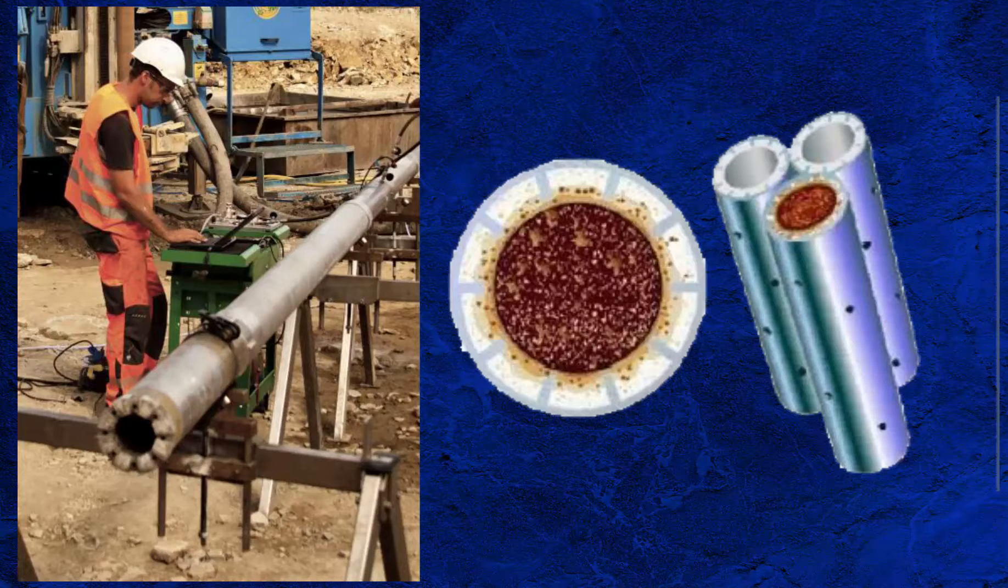During the trip out of hole, the pressure in the core barrel drops and reservoir fluids and gas are lost to the wellbore and into the mud system. This can affect the accuracy of data obtained from core analysis. Pressure coring and sponge coring systems were designed to minimize this effect and improve data accuracy.